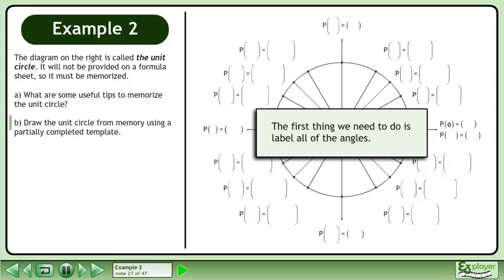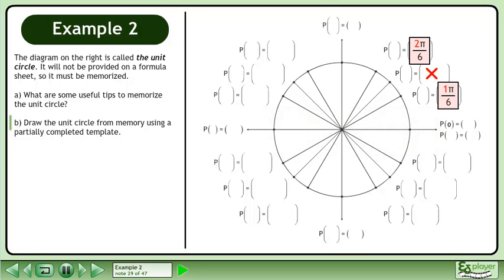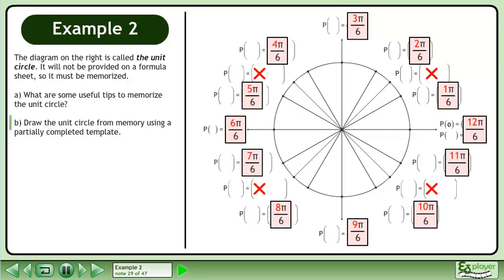The first thing we need to do is label all of the angles. Start with the multiples of 30 degrees. Count out multiples of π/6 around the unit circle and reduce each fraction.